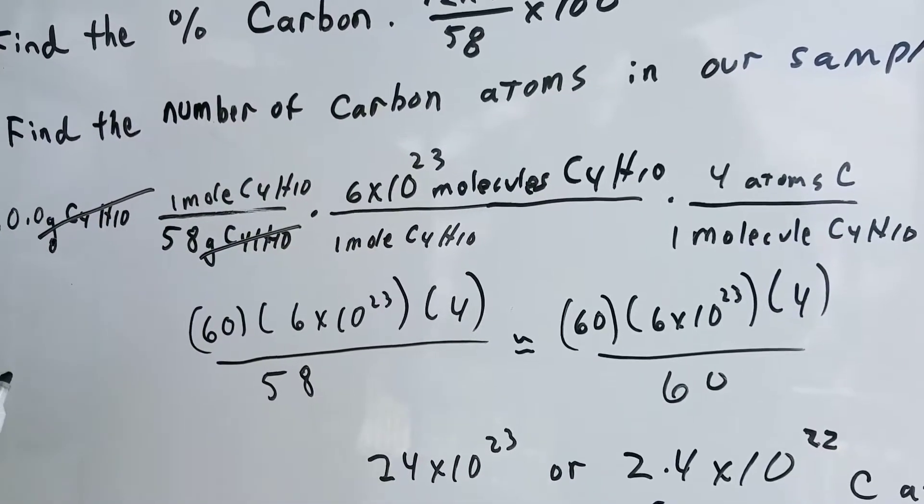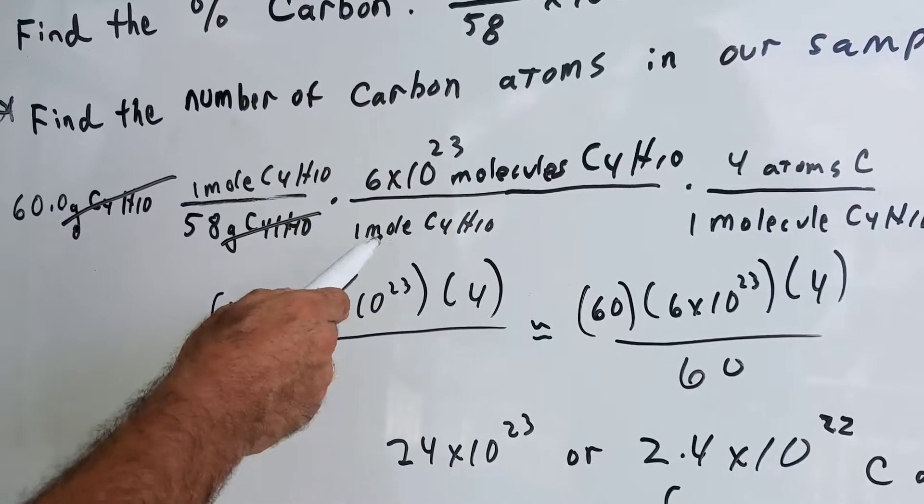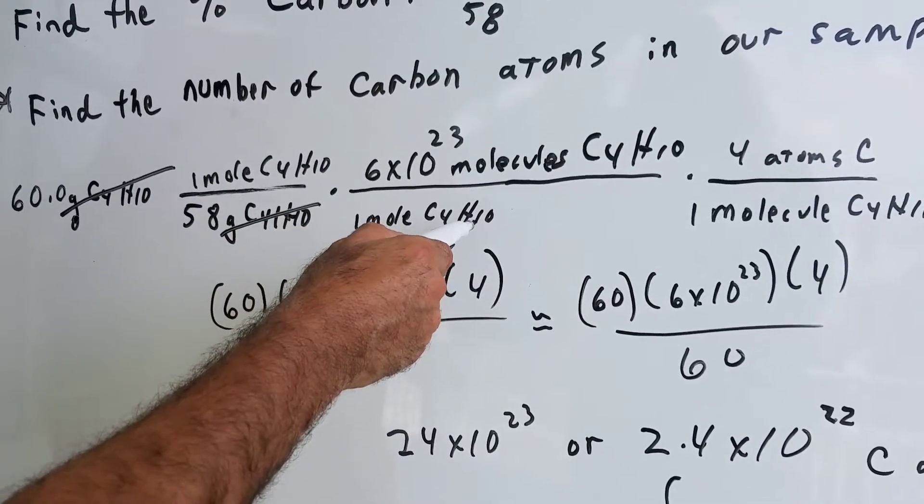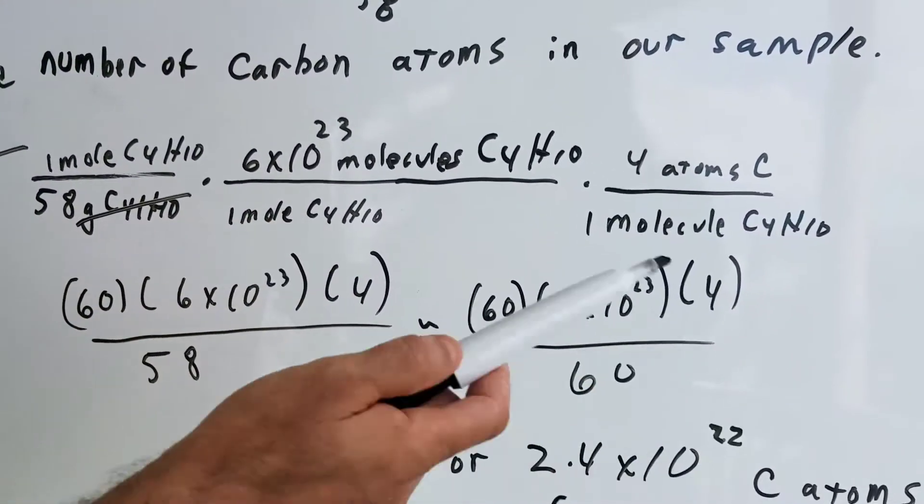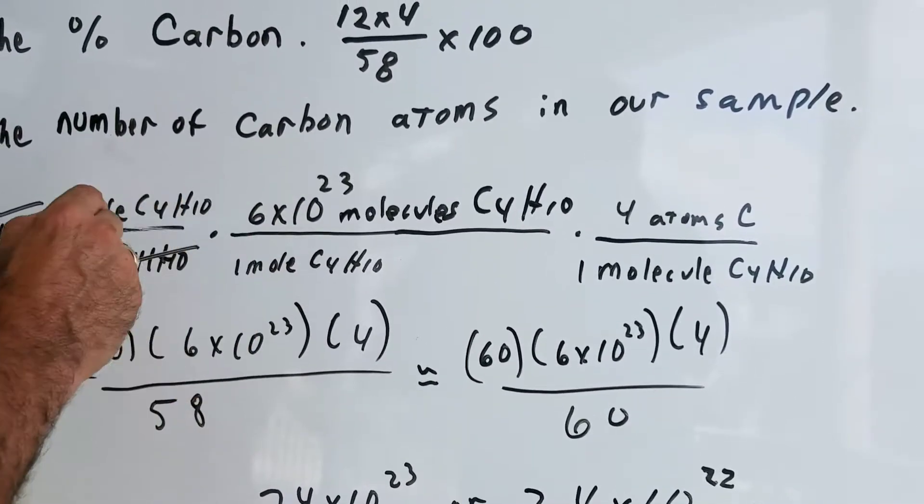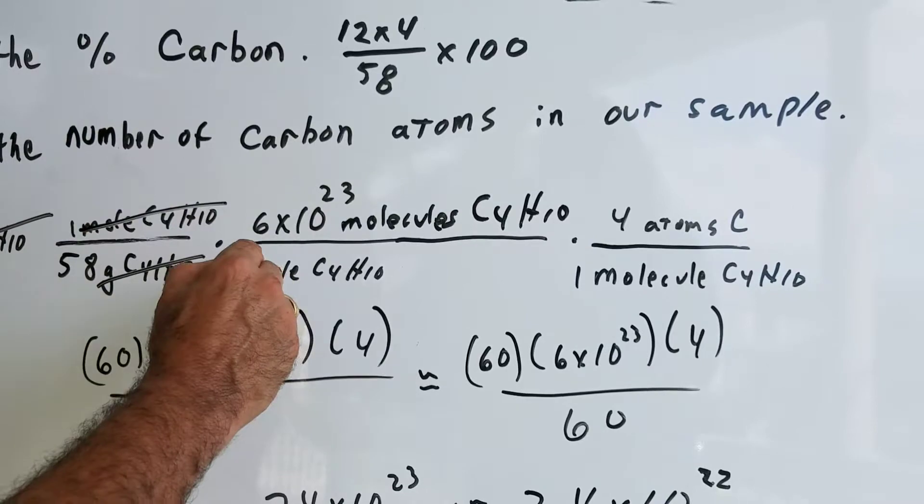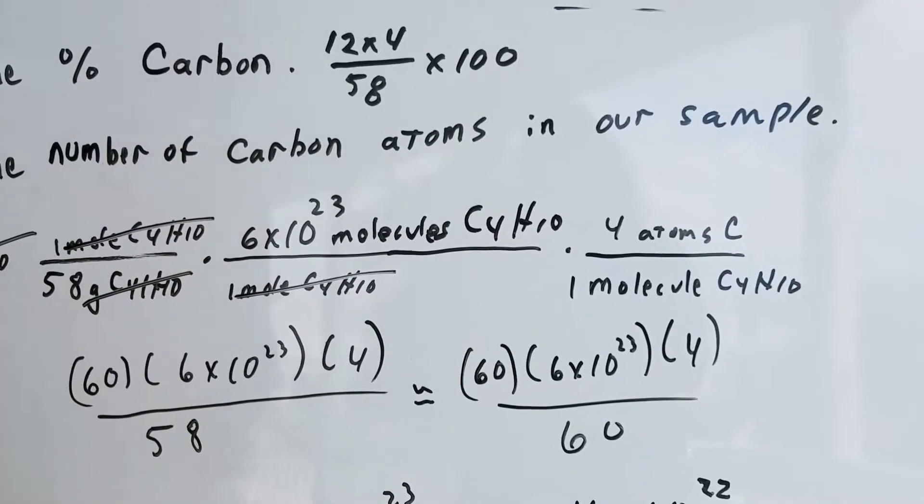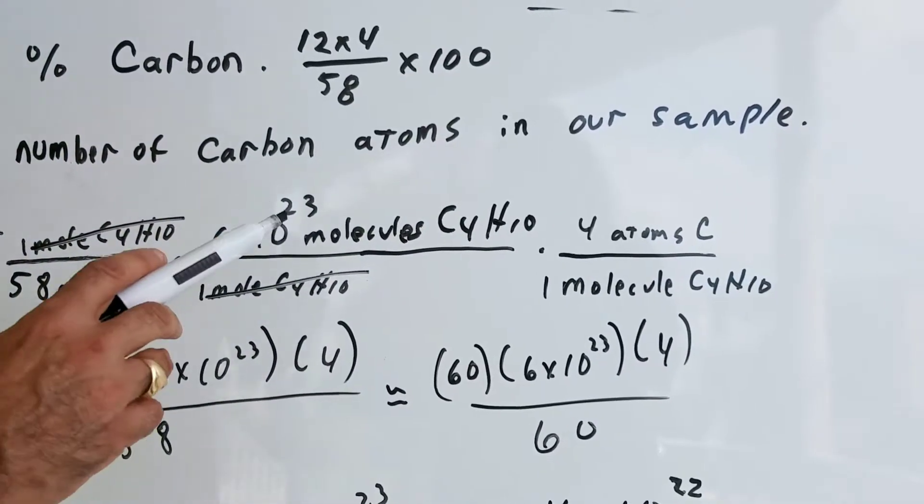Once we got it into moles, we've got to convert it into molecules, and we need a conversion factor. One mole of C4H10, one mole of any compound for that matter, contains 6 times 10 to the 23rd molecules. If this is true, and it is, we cancel out the word moles of C4H10.